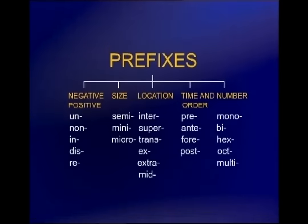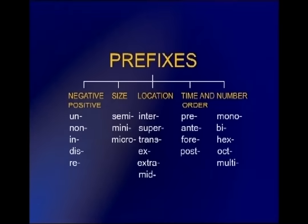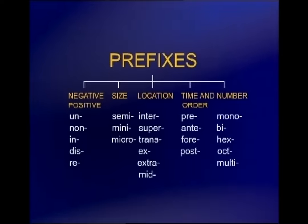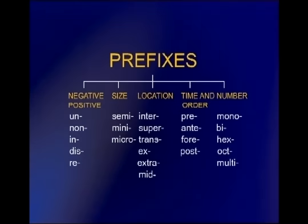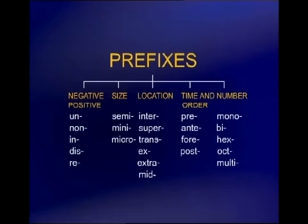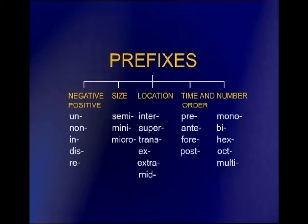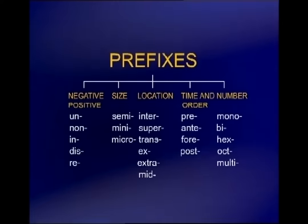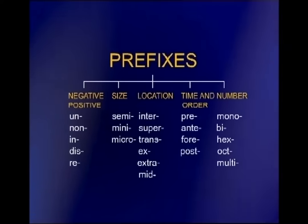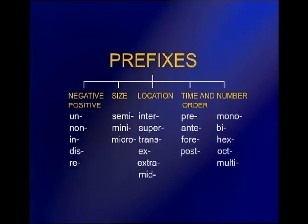You have prefixes related to location such as inter, super, trans, ex, extra, and mid. For time and order, you have prefixes like 'pre' which comes before, and 'ante' (a-n-t-e) — not a-n-t-i, which means the opposite. Here 'ante' means something that comes before, like an ante-chamber — a room that comes before the main room. 'Fore' as in 'forecast', and 'post' which is related with time and order.